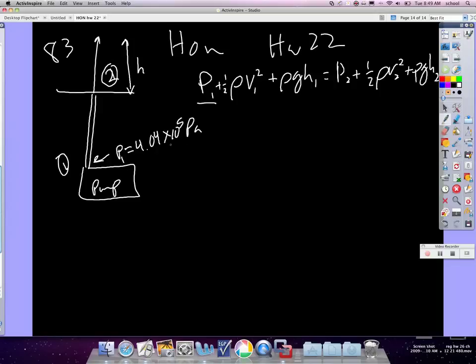And then up here, what is pressure 2? Yeah. P2 is atmospheric pressure, which is 1.01 times 10 to the 5th Pascal.